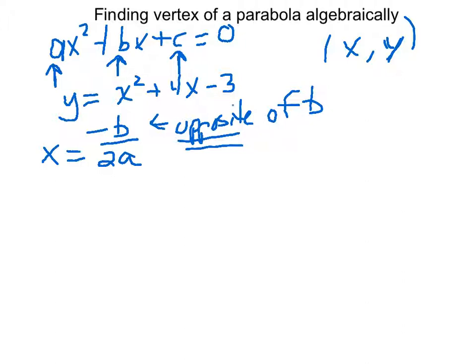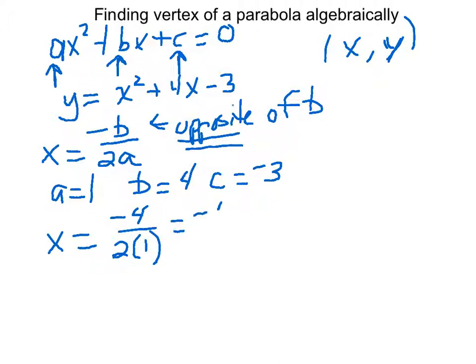Alright, so go back to our equation, x squared plus 4x minus 3. Our a value is 1, it's that invisible 1 that's in front of the x squared. Our b value is 4, and our c value is negative 3. Don't forget the negative sign's attached. So when we get our x value, it's the opposite of b, which is going to be negative 4, because it's the opposite of positive 4, over 2 times 1, which is our a value. So in other words, we're doing negative 4 over 2, which gives us negative 2.